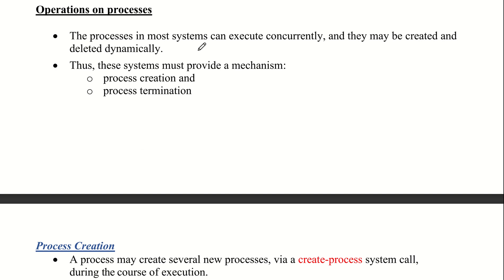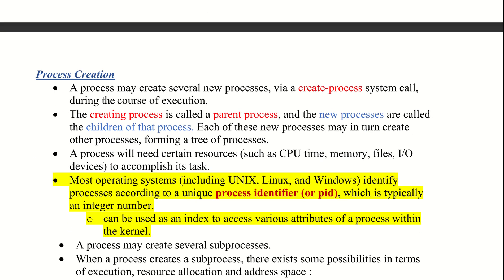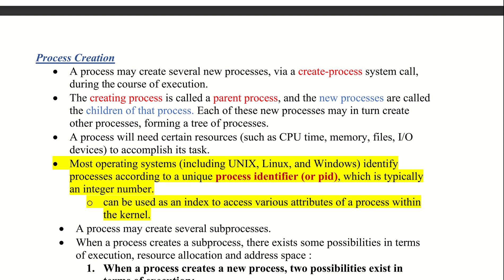The next topic under Module 2 is operations on processes. In most systems, processes can execute concurrently — they may be created and deleted dynamically. The system must provide a mechanism for both process creation and process termination. When a process creates another process using a system call, the creating process is called the parent process, and the newly created process is known as the child process.